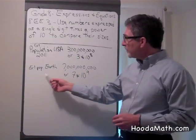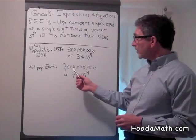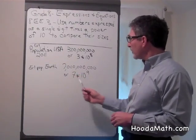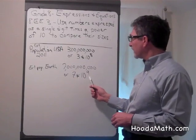The estimated population of the Earth at the same time was 7 billion people, or 7 times 10 to the 9th power.